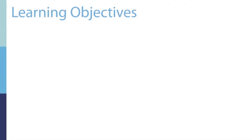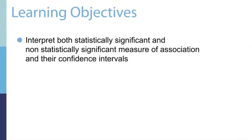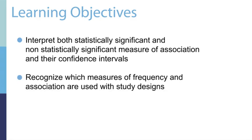So far we've covered both the definition and calculations for measures of association. Next, let's learn how to correctly interpret them. Once you've learned these, you might find yourself critiquing news reports that are incorrectly using measures of association. After reviewing this segment, you should be able to interpret the measures of association and recognize which measures of disease occurrence or frequency and association are commonly used with different study designs.